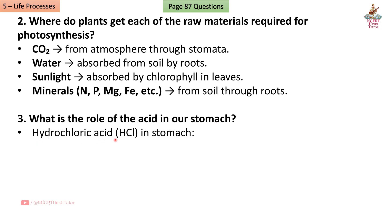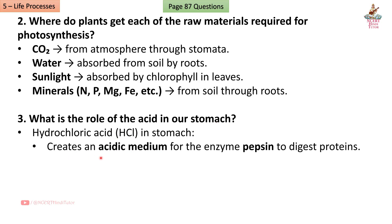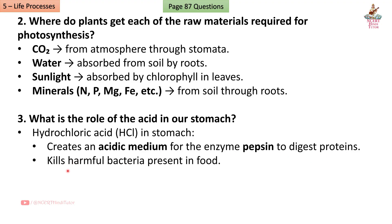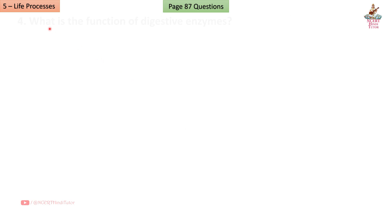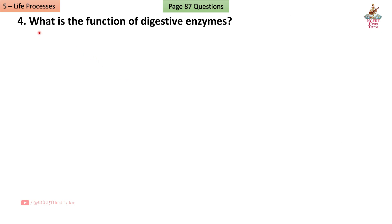Question 3: What is the role of the acid in our stomach? Answer: Hydrochloric acid (HCl) in the stomach creates an acidic medium for the enzyme pepsin to digest proteins, and kills harmful bacteria present in food.